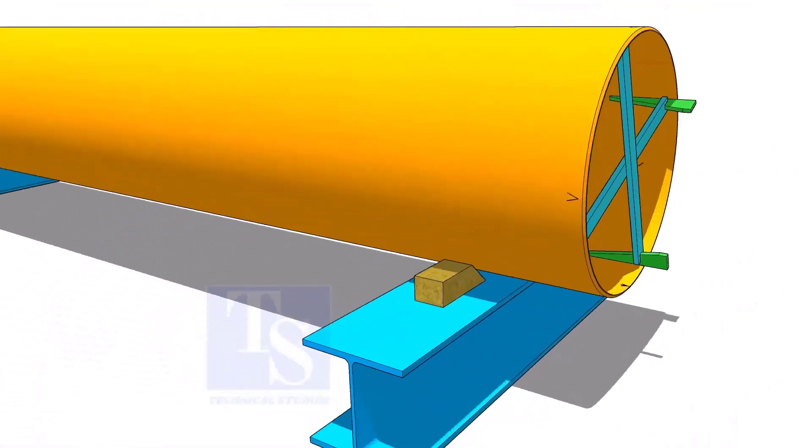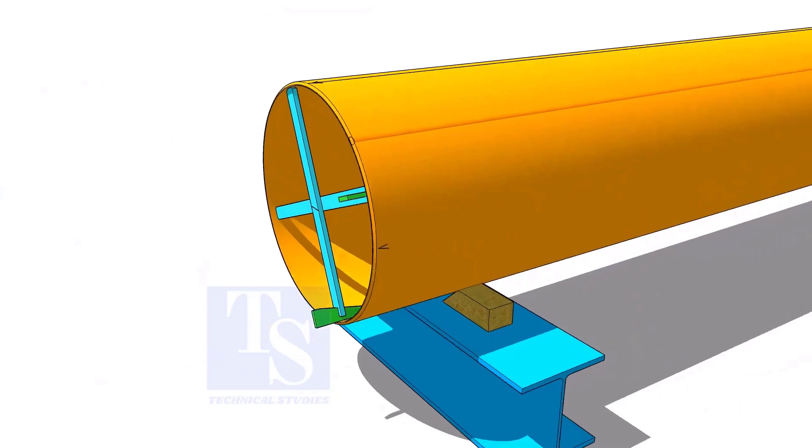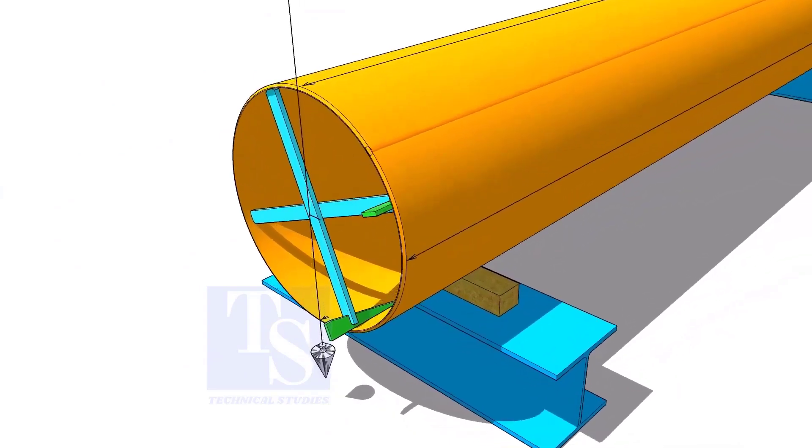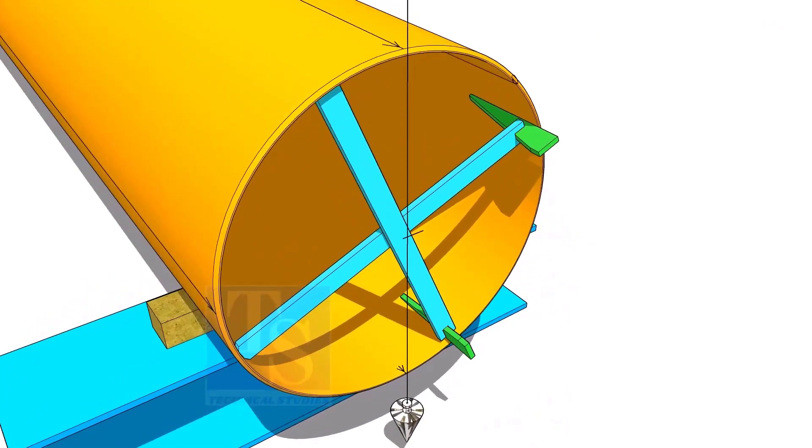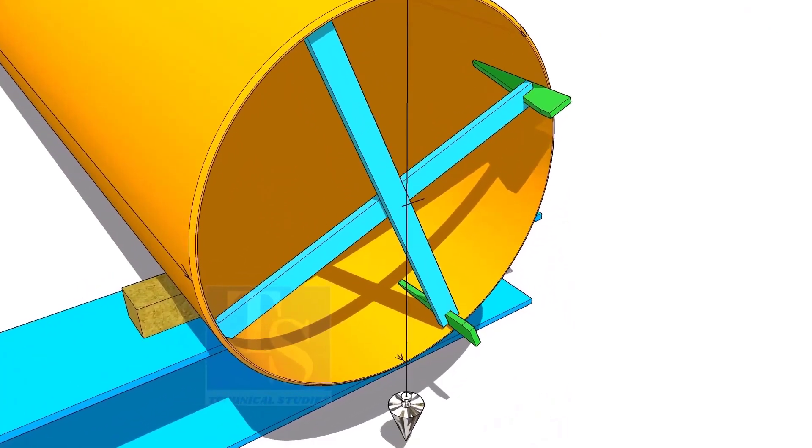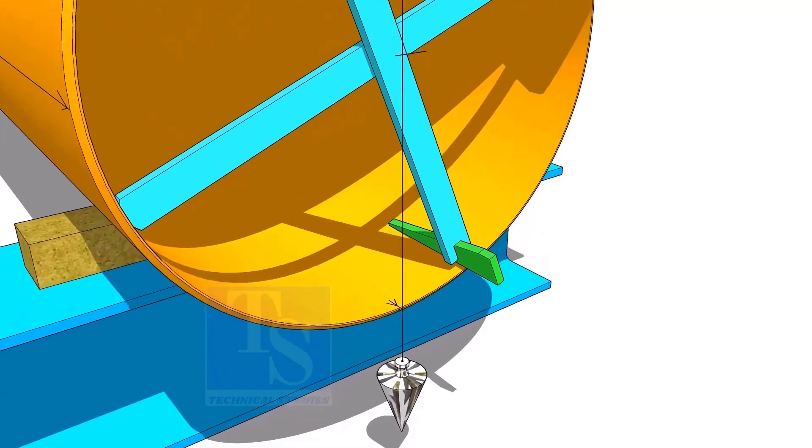Draw all the center lines. Put the plumb on the top side line. If the string passes through the line on the bottom, the lines are correct.